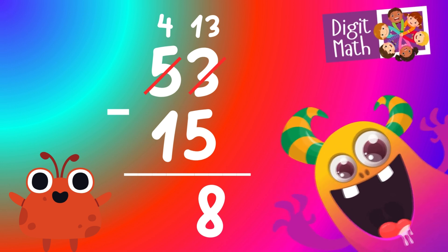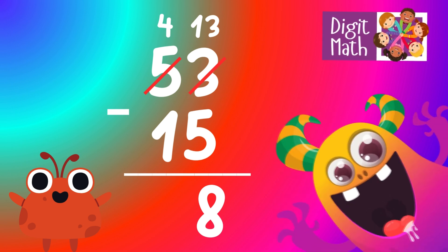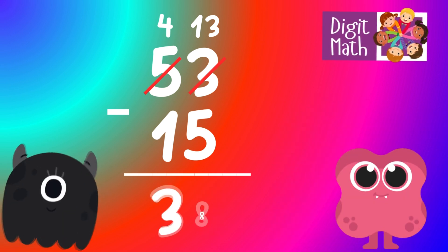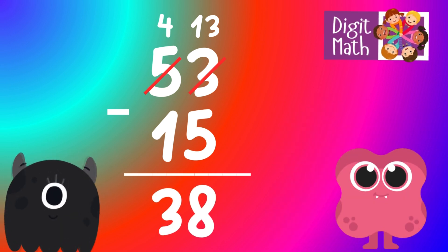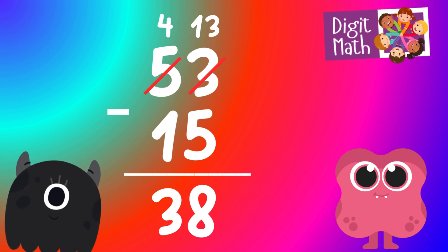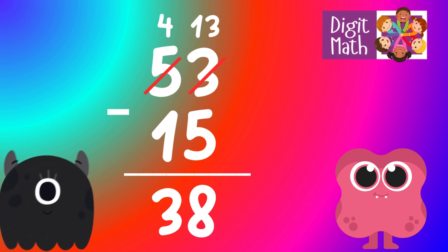In the Tens column, we now have 4. Subtract 1 from 4, which equals 3. So the final result is: 53 minus 15 equals 38.